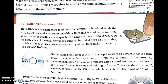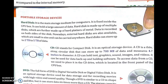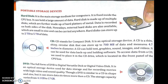CD stands for Compact Disk. It is an optical storage device. A CD is a thin, shiny circular disk that can store up to 700 MB of data and measures 4.7 inches in diameter. A CD can hold text, graphics, sound, images, and videos. It can be used for data backup and holding software. To access data from a CD, we need to place it in the CD drive, which is located in the front panel of the CPU box.